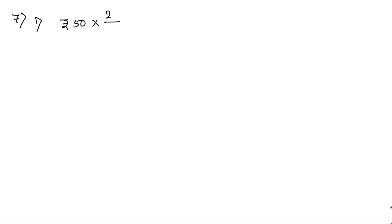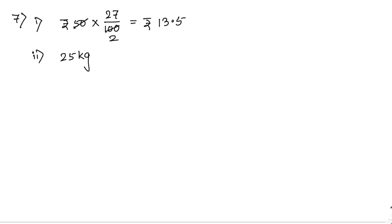Now sum number 7: find the value of the following. First: 27 percent of rupees 50. Write 50 into 27 by 100, which simplifies to 27 by 2, equal to 13.5. So the answer is rupees 13.50.